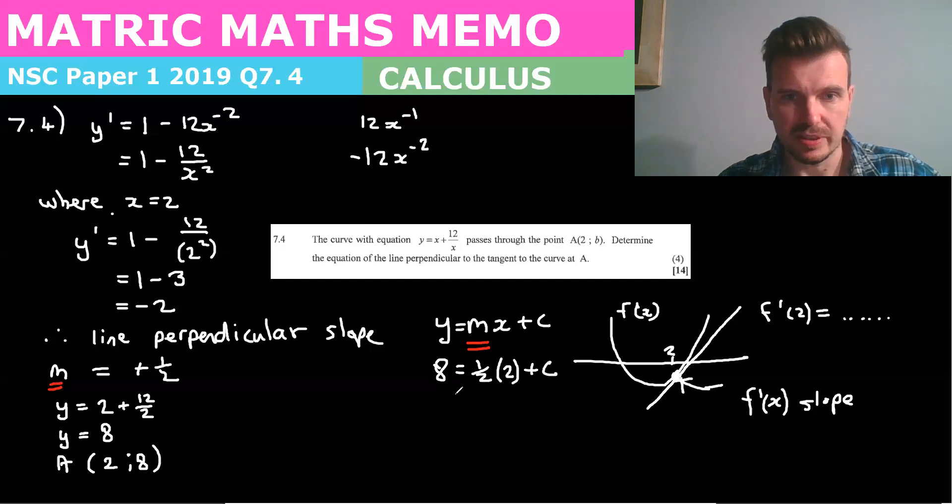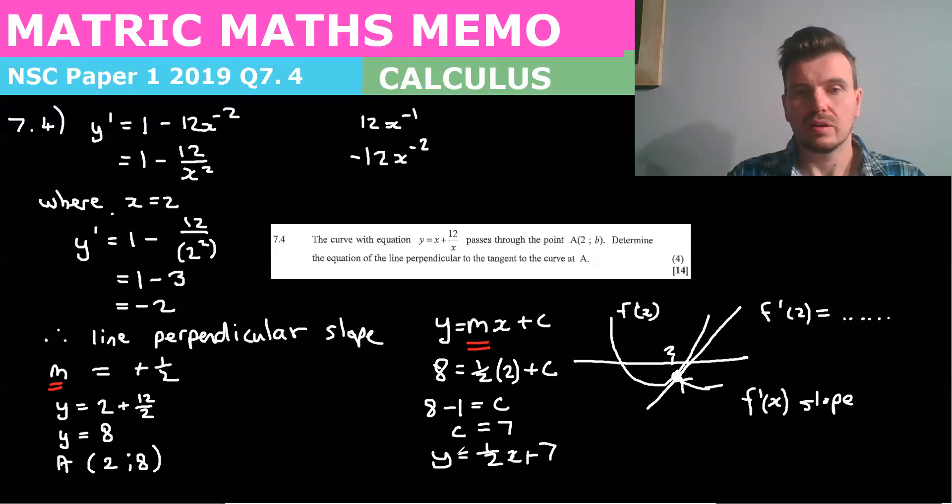So we can figure out c because it'll be 8 minus 1, which is equal to c. c equals 7. So the final equation is y = (1/2)x + 7. That is question 7.4. I will see you again before I think we're doing question 8 next. That's what comes after 7.